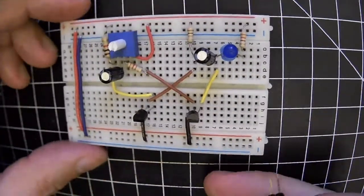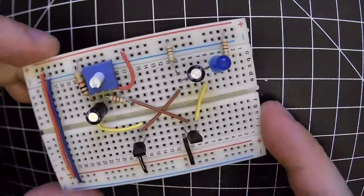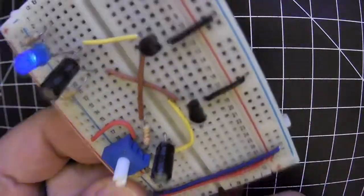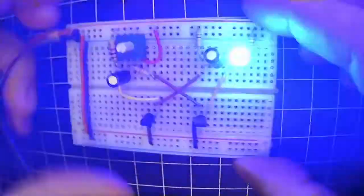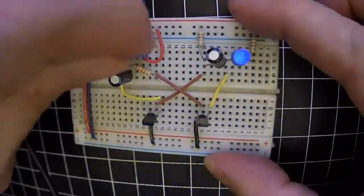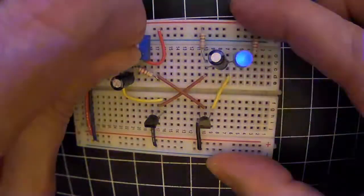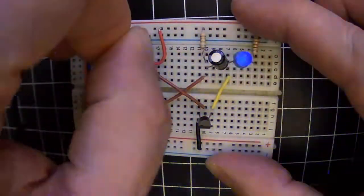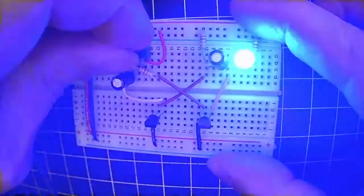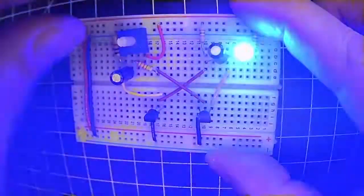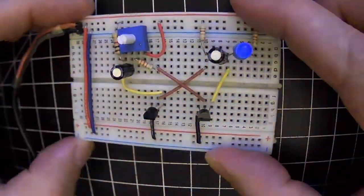Now if all went well, according to our construction here, when we plug this in, it should oscillate. Oh yes it does! And if I rotate the pot I get different frequencies. Oh boy. Old school two-transistor oscillator.